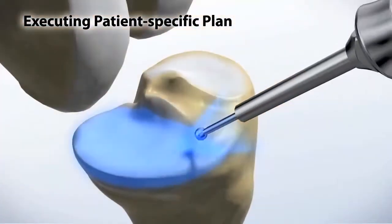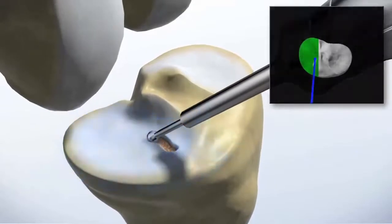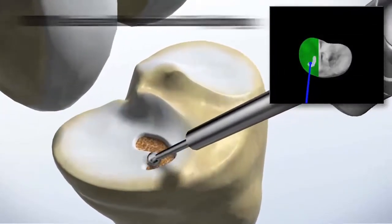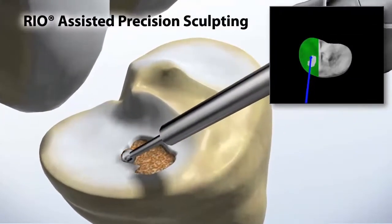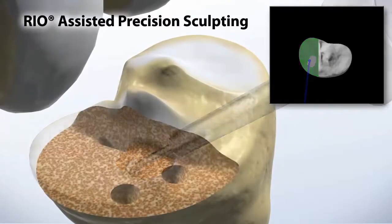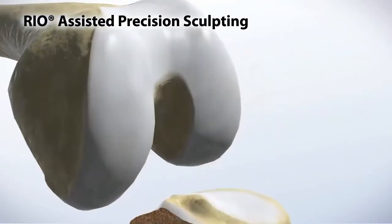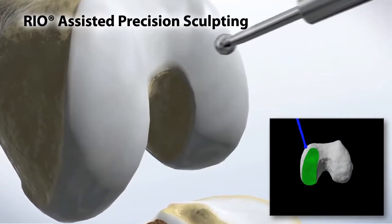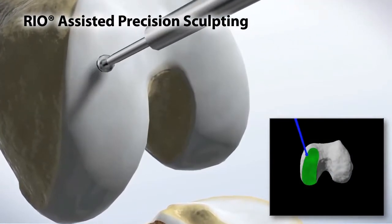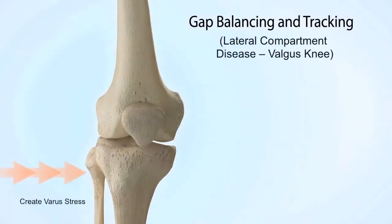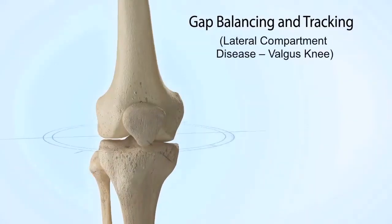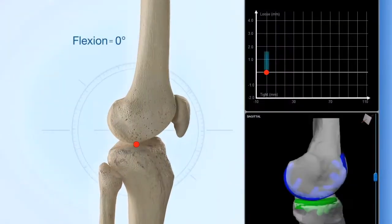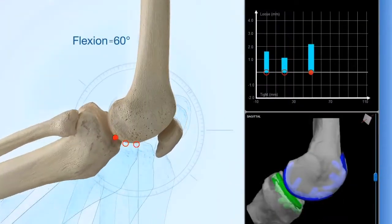We can do the surgery virtually before the patient is even in the operating room — virtually placing the implants, sizing them, checking the balance and alignment. Then intraoperatively we can check alignment again and fine-tune things to make sure everything is just right before we leave the OR. It also gives us more precise information about balancing the flexion and extension gaps, which helps with the patient's range of motion and stability — information we didn't have available in the past.